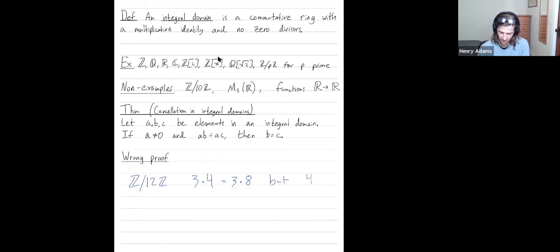But this does not mean that 4 is equal to 8. No, 4 is not equal to 8 in Z mod 12Z. So I had ab equal to ac, but in Z mod 12Z, I can't cancel the 3s to get 4 is equal to 8. The cancellation property is not true in all rings. It's not true in Z mod 12Z.